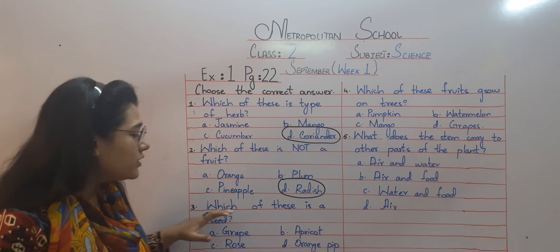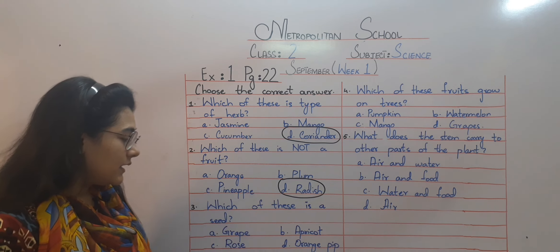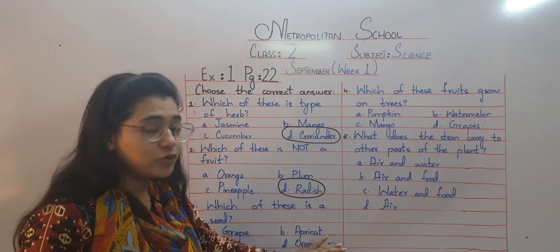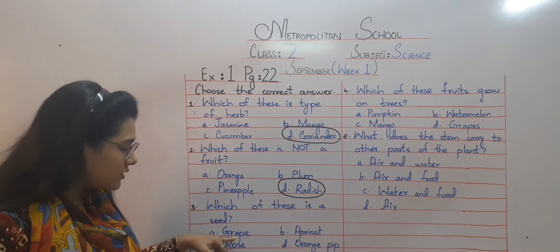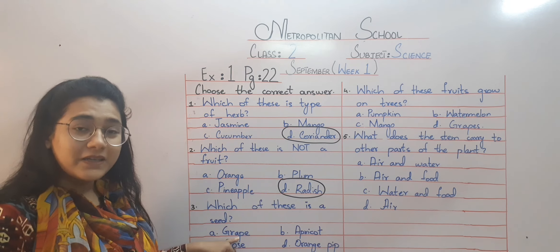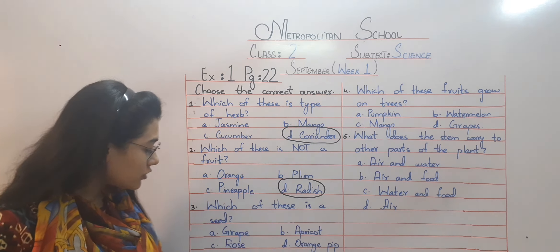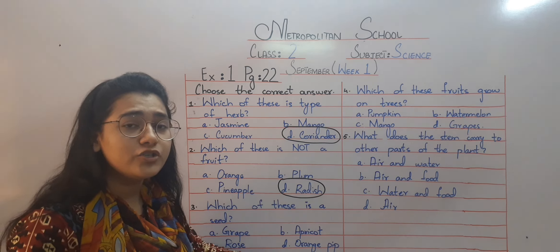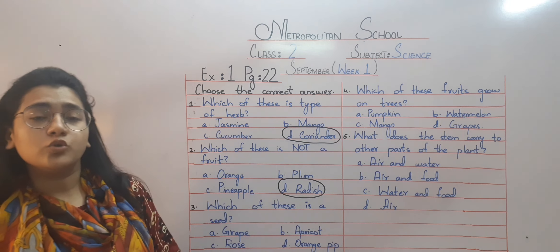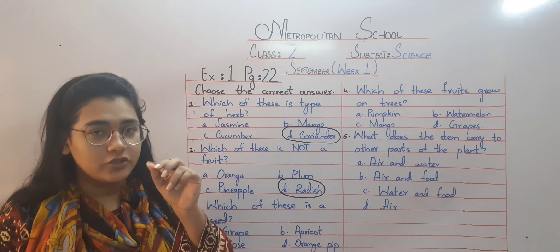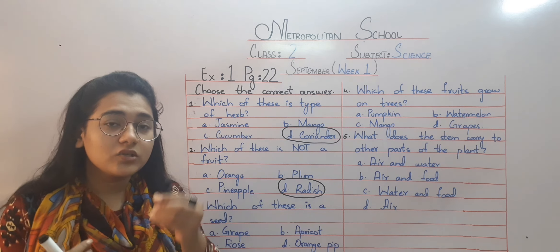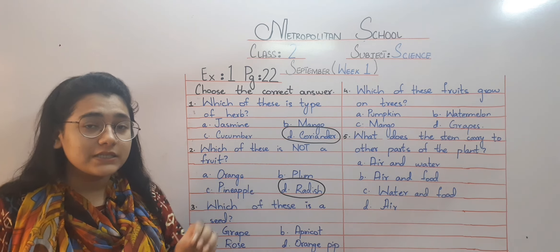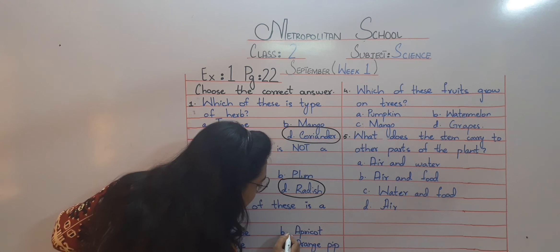Number three: which of these is a seed? The options are grape, apricot, rose, or orange pip. Grape is a fruit, apricot is also a fruit, rose is a flower — so the answer is orange pip. Orange pip refers to those seeds inside an orange — when you eat an orange, many small seeds come out from inside. Those are called orange pip.